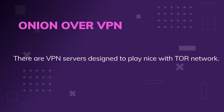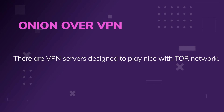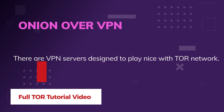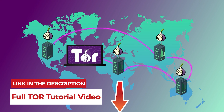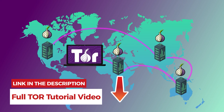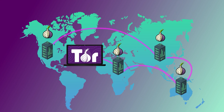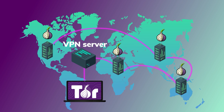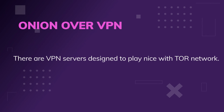Then there's Onion over VPN — VPN servers that are designed to work over the Tor network, that is, the Onion Router. That network is designed to anonymize your browsing, but really needs a VPN to properly secure everything. People have been tracked via Tor, it's sad to say. So if you're going to use Tor, be sure to use a VPN in conjunction with it, and a VPN that specifically supports Tor wouldn't hurt.